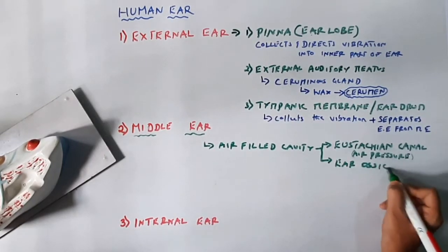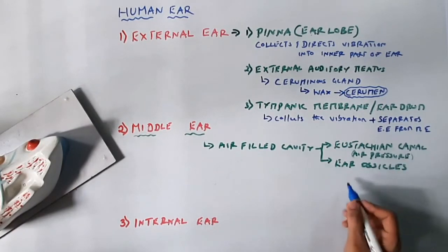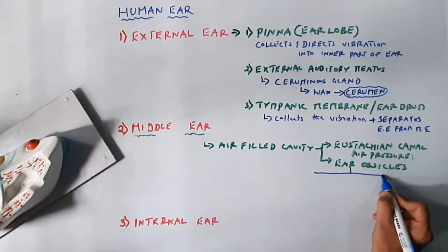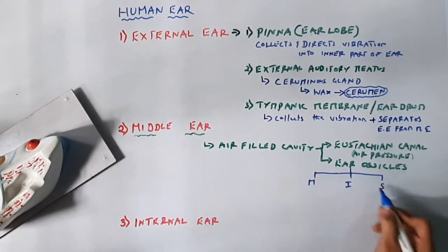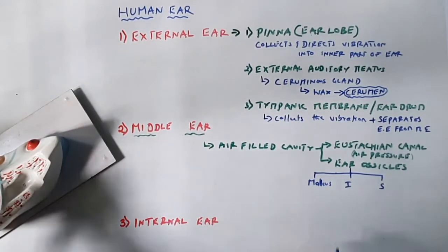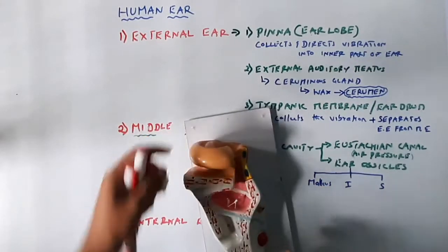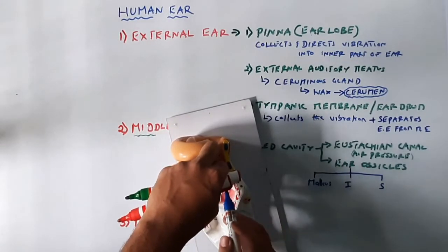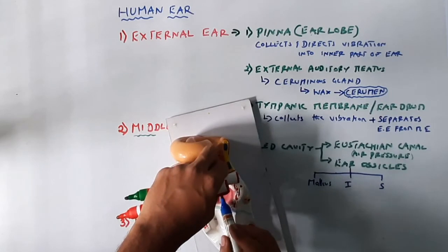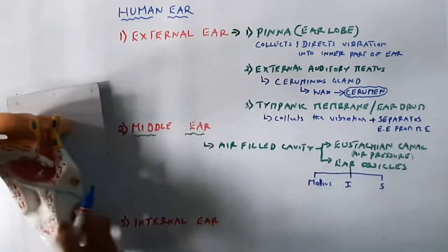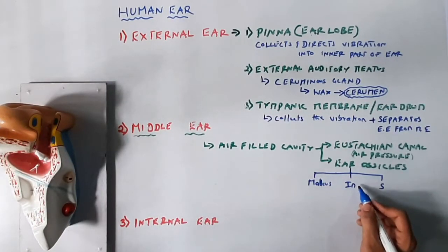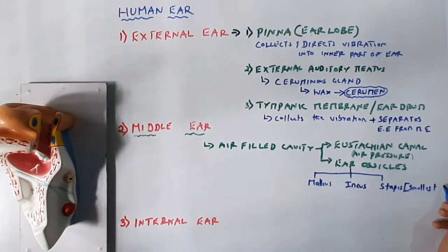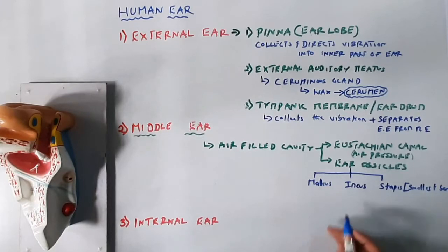The second component of the middle ear is the ear ossicles. You may get exam questions asking you to name them in order. Use the mnemonic MIS: Malleus is the first ear ossicle, Incus is the second, and Stapes is the third. The stapes is the smallest bone in the human body. They are all connected and help transmit vibration into the inner ear.